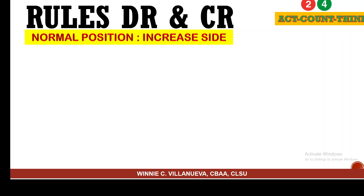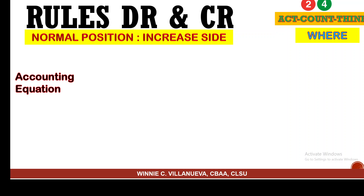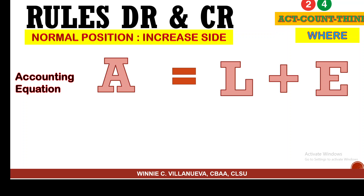When we look at the increased side — when will it be the left (debit) and when will it be the credit? Looking at the accounting equation: your asset is on the left and your liability and equity are on the right. That's the normal position.